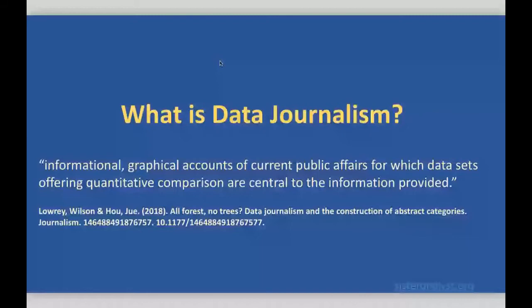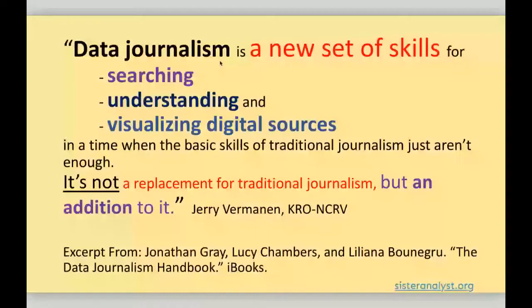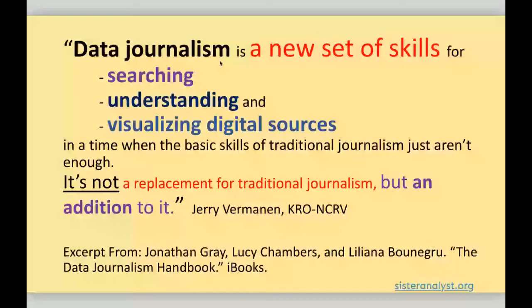There is no generally accepted definition of data journalism. The one that best describes its application in Serbia talks about the requirements of a new set of skills for searching, understanding, and visualizing digital sources. Basic skills associated with traditional journalism are clearly no longer enough. Data proficiency is an additional and necessary asset built on the foundation of established journalistic practice. I like to break those definitions into simpler terms: data journalism is telling a compelling story with data as a source. The two most important benefits are that it reveals stories hidden within numbers and helps to authenticate digital content and identify sources in order to detect manipulation.